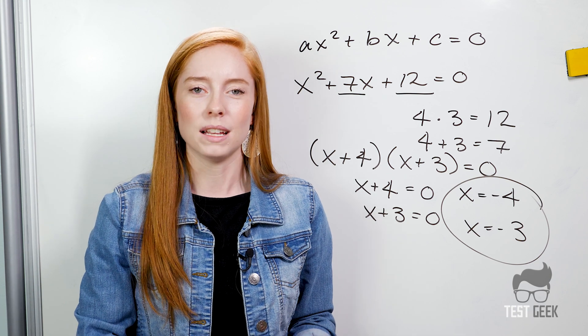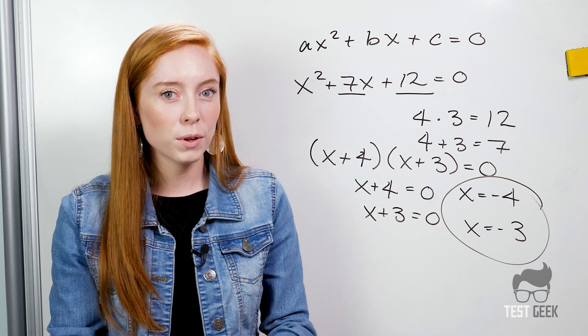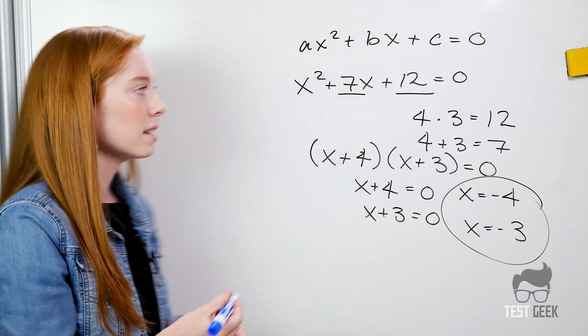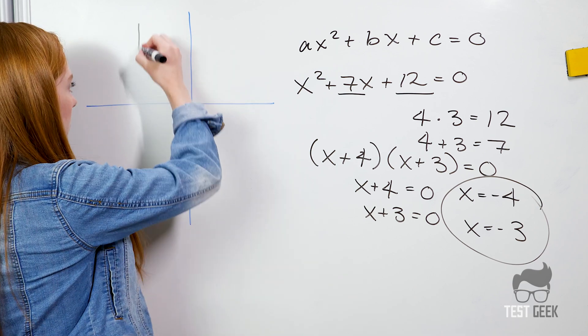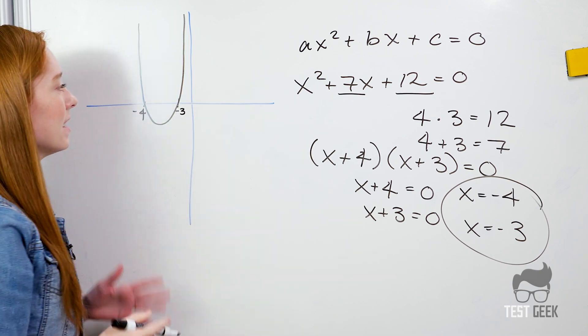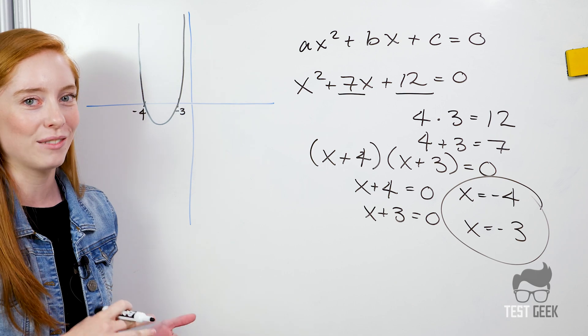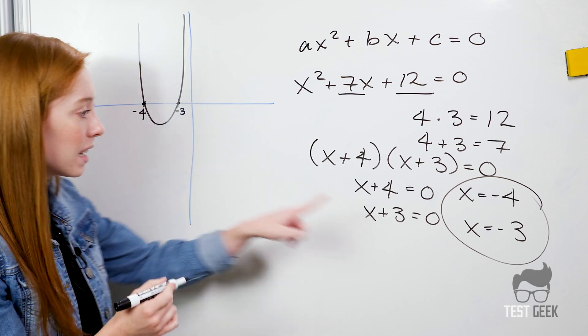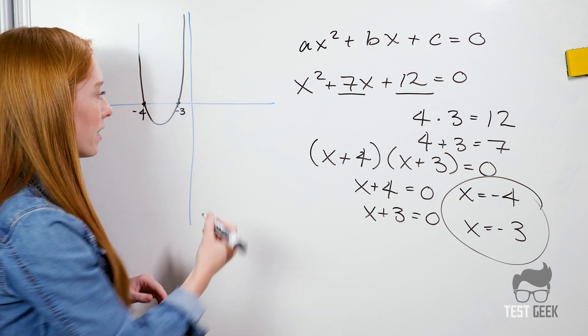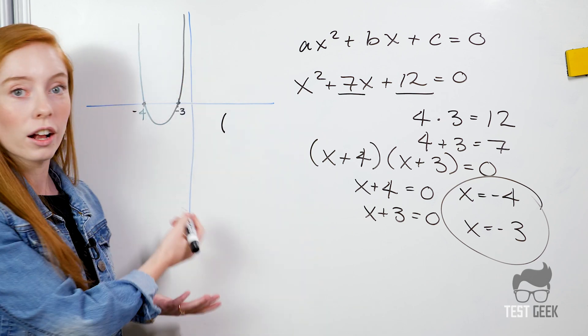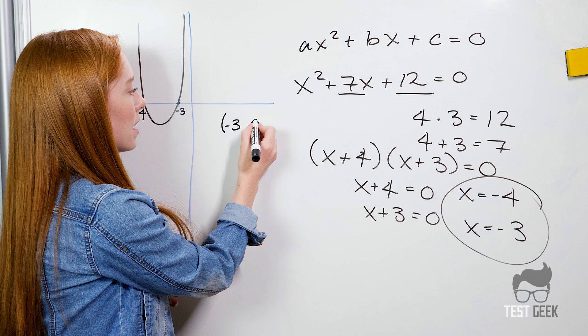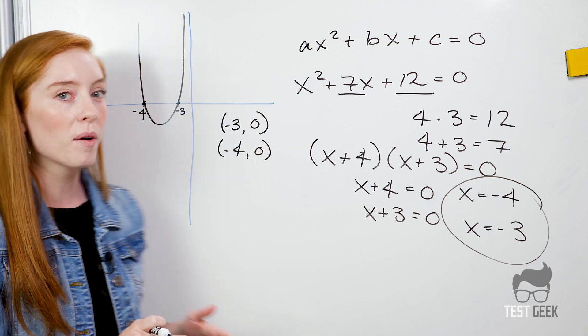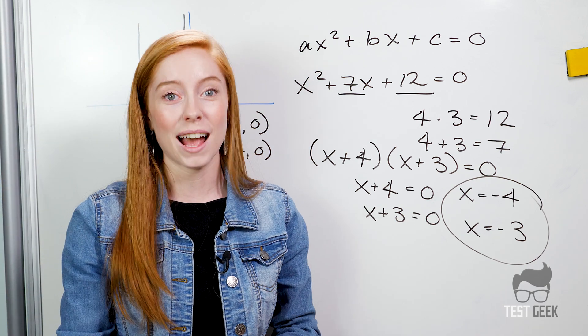We can also see solutions referred to as x-intercepts or zeros and it can be helpful to remember what this really means. If we were to graph this trinomial it would look something like this. This isn't exactly to scale but hopefully this gives you an idea. We would have it crossing at the x-axis at two points and those would be negative 3 and negative 4. So we inherently have two points on our trinomial graph that would be negative 3, 0 and negative 4, 0. That's why we call these our x-intercepts or sometimes our zeros.